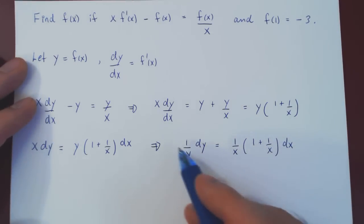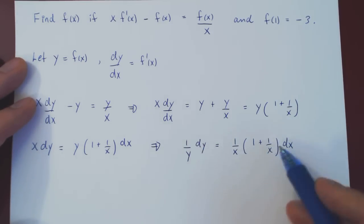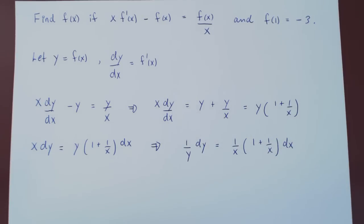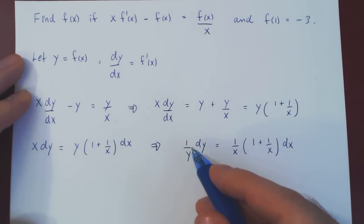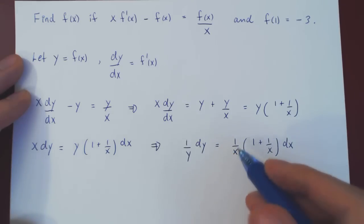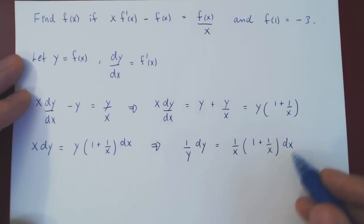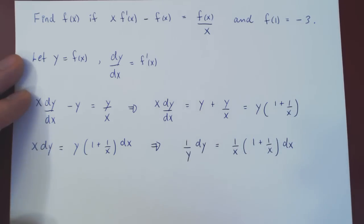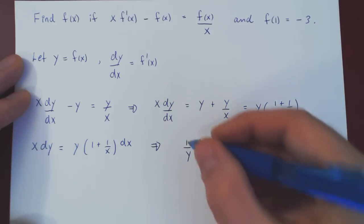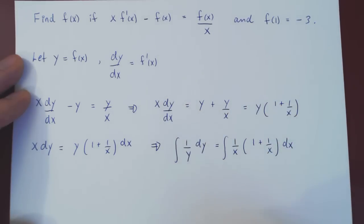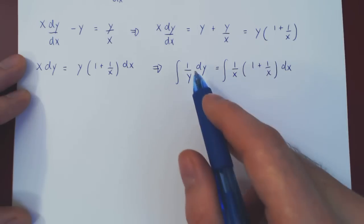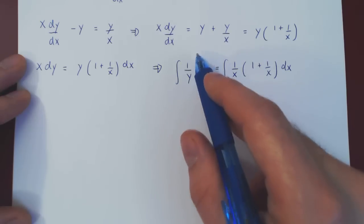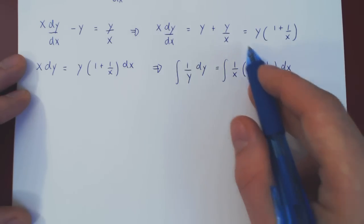We have a separation of the variables — all the y's and all the x's together. On the left, we have a differential as a function of y; on the right, a differential as a function of x. Both sides are equal as differentials, so they have the same integral. We can integrate both sides and preserve the equality, with one side entirely in y and the other entirely in x.